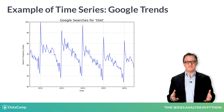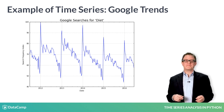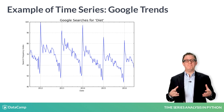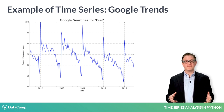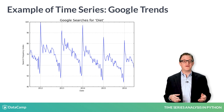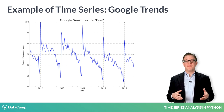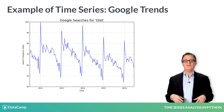There are many other types of data that are not covered in this course — for example, cross-sectional data that are taken at one point in time. Time series come up in many contexts. Here is a time series of the frequency of Google searches for the word 'diet' over a five-year period. You can see an interesting pattern: it hits a low around the holidays and then spikes up at the beginning of the year when people make New Year's resolutions to lose weight.